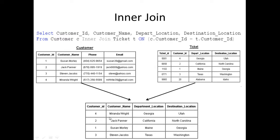And four is also a match, as we can see here between the ticket and the customer table. So we're going to get Miranda Wright, who's going from Georgia to Utah. Now, if you notice, we have an extra record in the ticket table with a customer ID of 20. This record is not going to be returned because there is no match. The inner join only returns records that have at least one match between two or more tables.